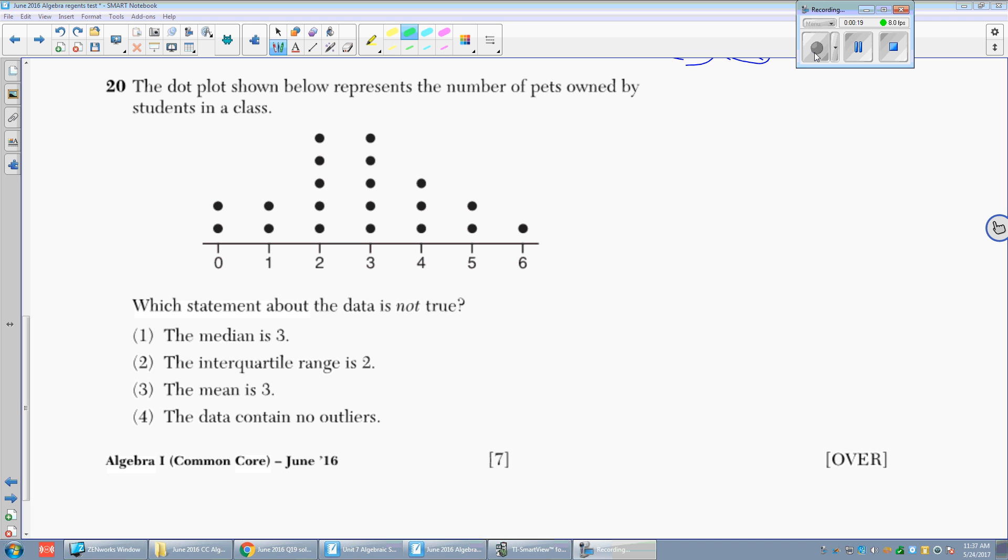Number 20 says the dot plot shown below represents the number of pets owned by students in a class. Which statement about the data is not true? I am looking for the false information. So before doing the video I counted up that there are 20 dots. Normally we would cover up the choices however we just have to figure out which one is not true.